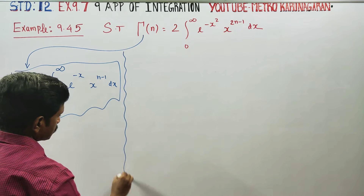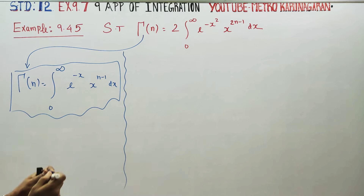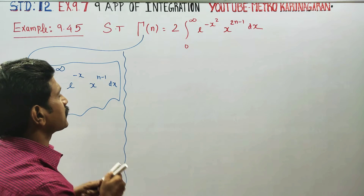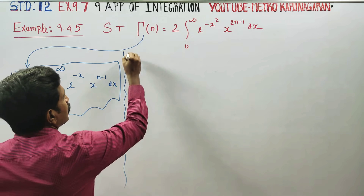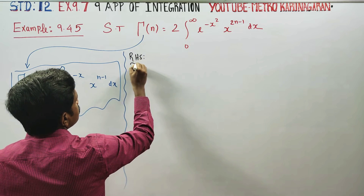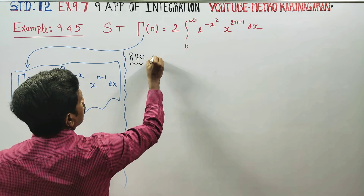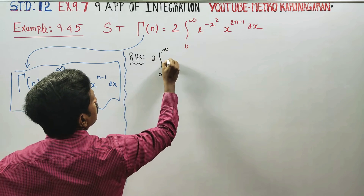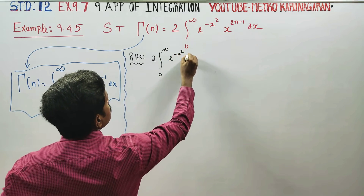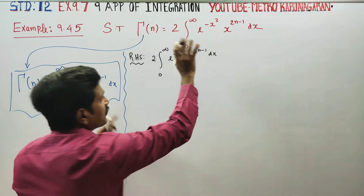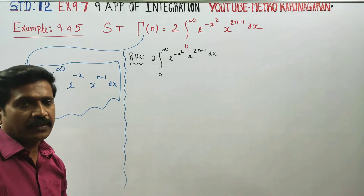I am going to start with the RHS. The RHS is the sum of 2 times the integral from 0 to infinity of e to the power minus x squared, times x to the power 2n minus 1, dx. Let's simplify.